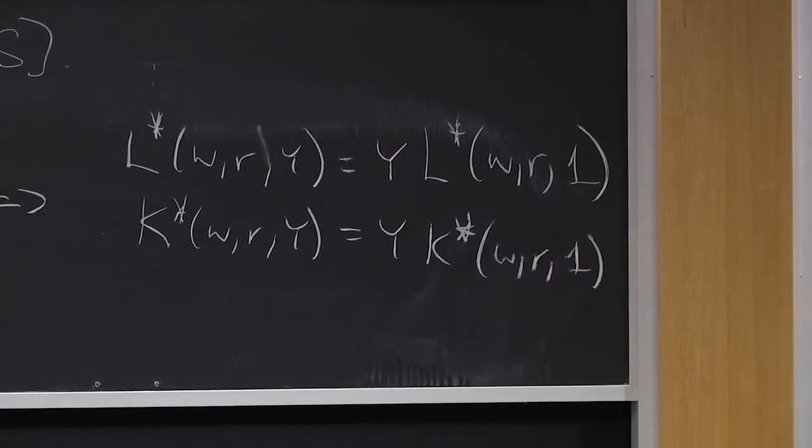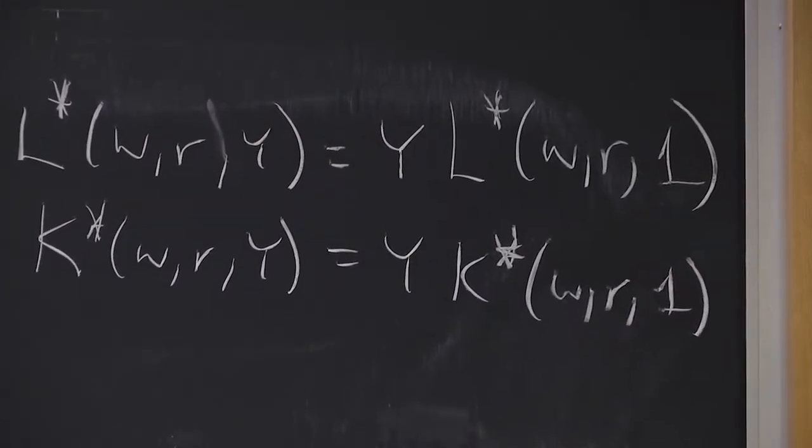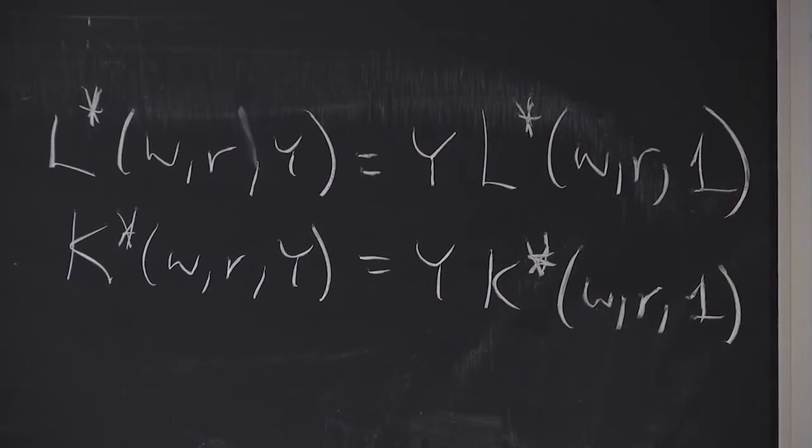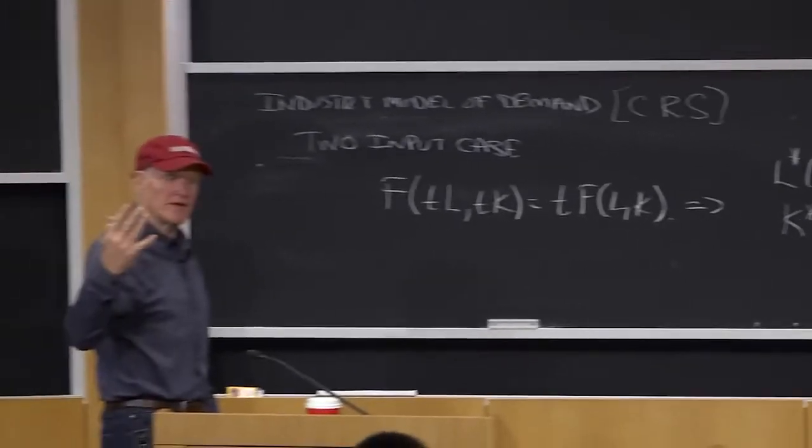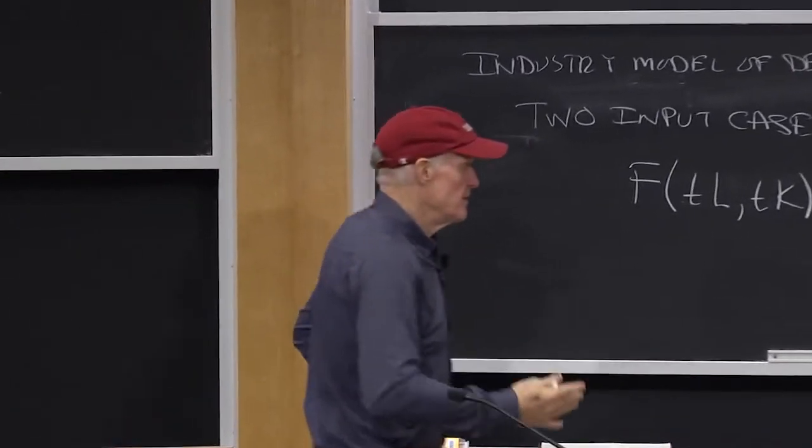That is, the factor demands are just proportional to output. If I want to produce twice as much output, I use twice as much of everything. Right?